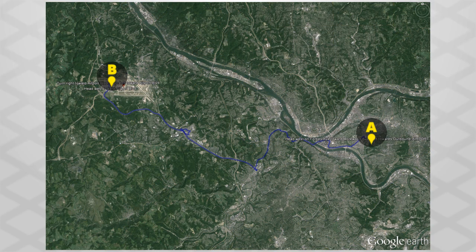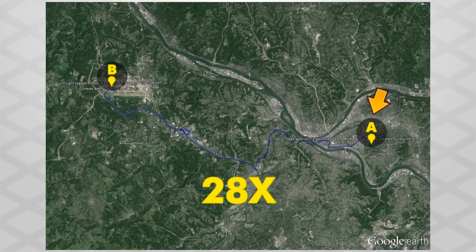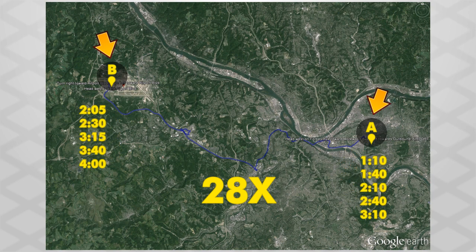In the end, as the abstraction designer, you might decide that the most important information is simply where to get on the bus, which bus to get on, where to get off the bus, what times to get on and off, and the general shape of the route within the city.